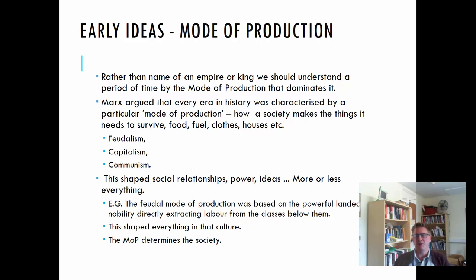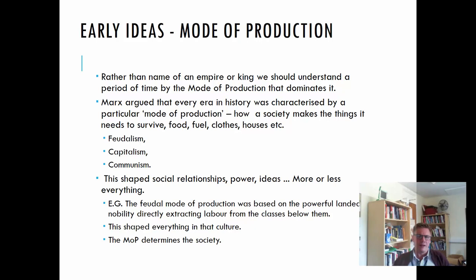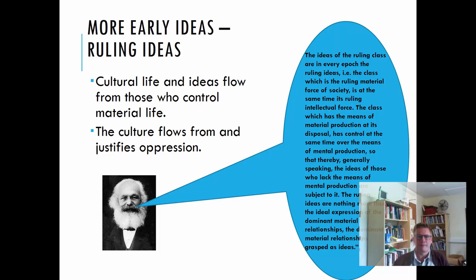For example, the feudal mode of production was based on a powerful landed gentry or nobility directly extracting labor from the classes below them, and that shaped everything in that culture — nothing escaped it. What Marx is arguing is that the mode of production, the system and practices a society uses to produce things, determines the nature and structure of that society. Cultural life and ideas flow from those who control material life; the culture flows from and justifies the oppression that goes on in a society.